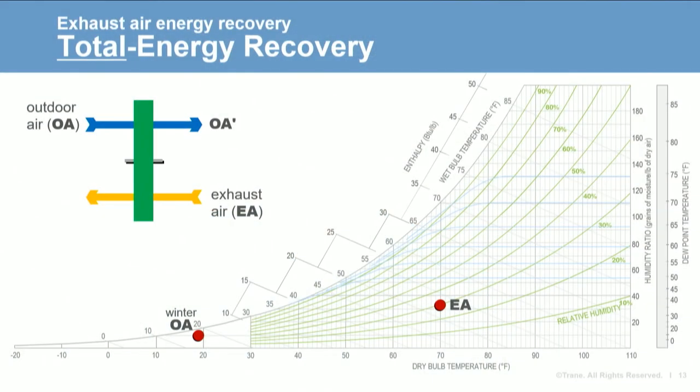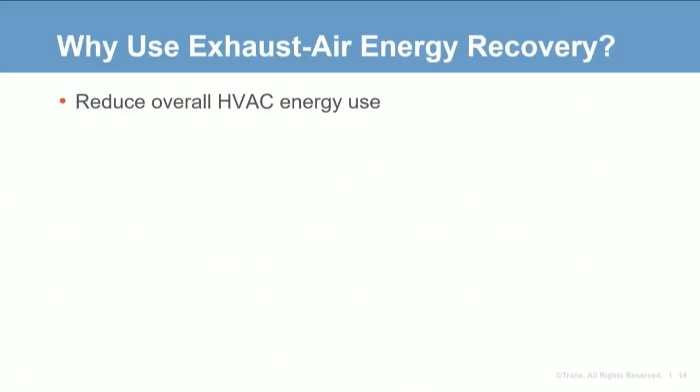When it's cold outside it's also very dry, so in winter total energy recovery transfers water vapor from the more humid exhaust air, humidifying the entering outdoor air. Depending on the application, this can improve occupant comfort by keeping indoor humidity levels higher during dry winter months, or if a humidifier is installed, this reduces the humidification load too. So exhaust air energy recovery can reduce the cooling and heating energy required to condition outdoor air being brought into the building.